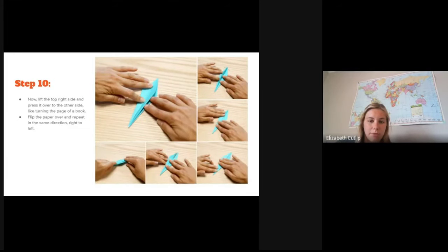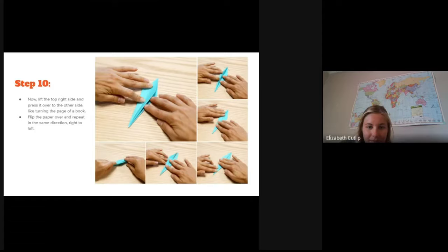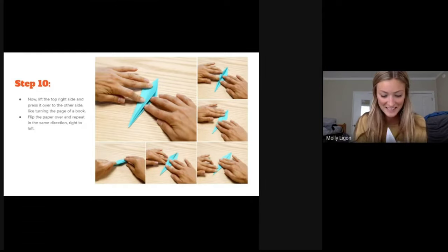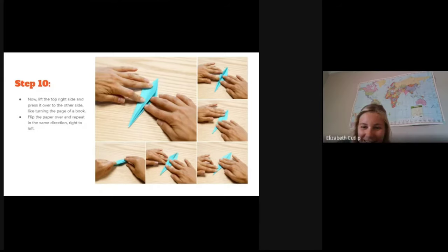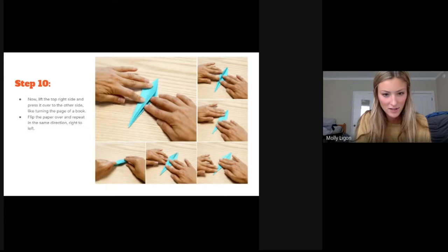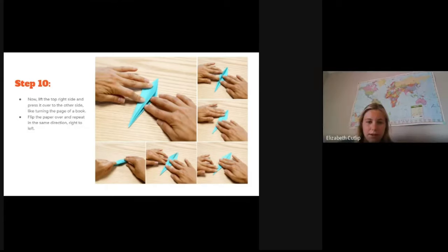All right. So now lift the top right side and press it over to the other side, turning it like a page of a book, and then flip that over and repeat in the same direction. I feel like I might have messed it up. We'll see. It's okay. You can still get there. I think I might have too. There we go. Got it.